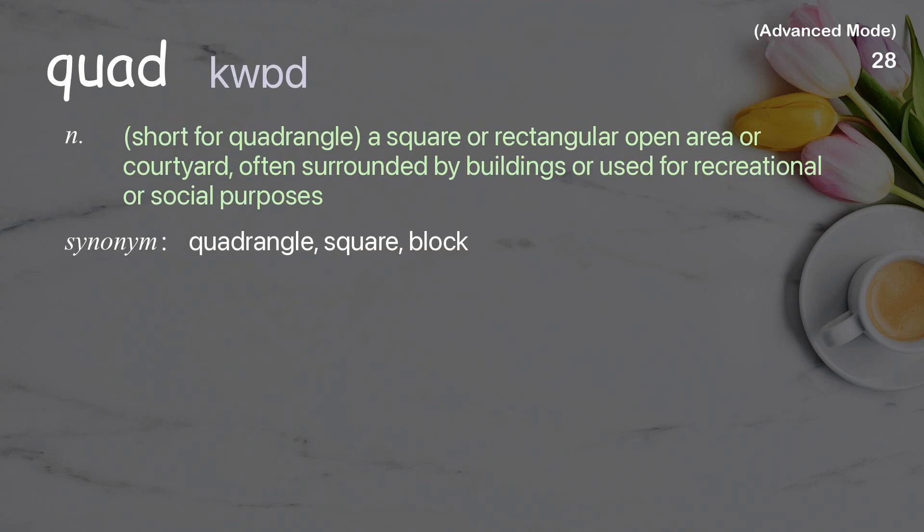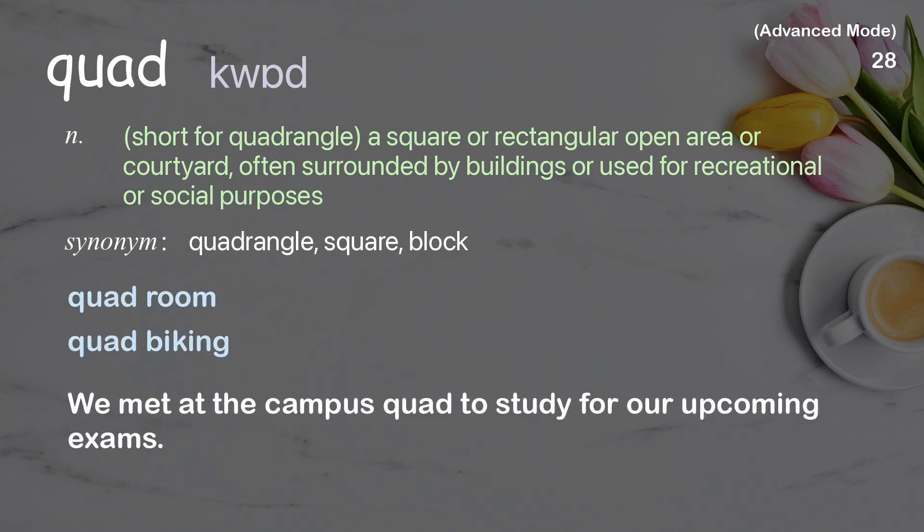Quad: short for quadrangle; a square or rectangular open area or courtyard, often surrounded by buildings or used for recreational or social purposes. Examples: quad room; quad biking. We met at the campus quad to study for our upcoming exams.